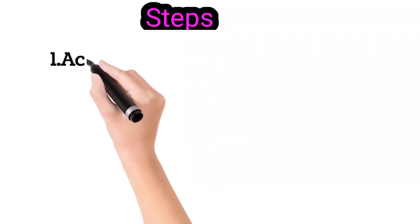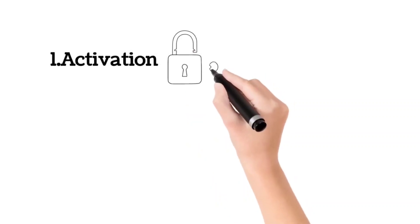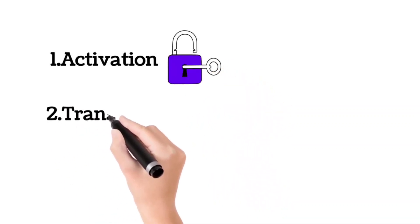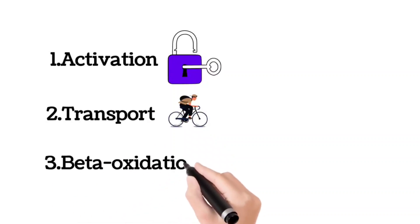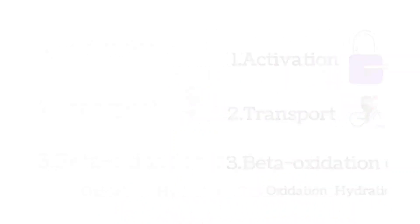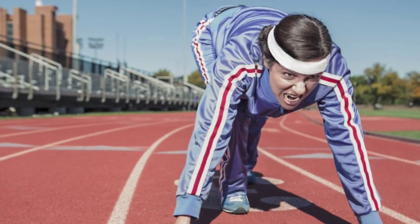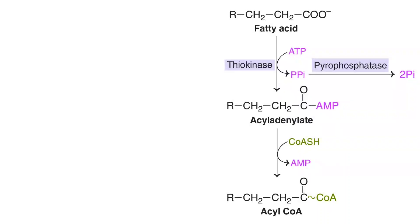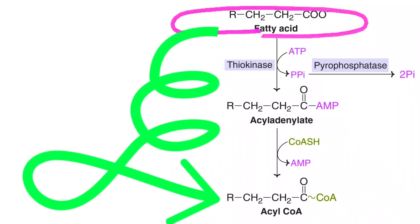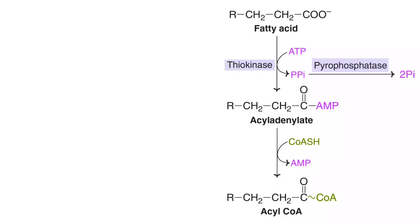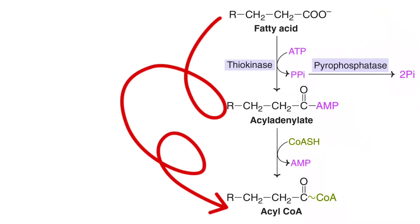Beta oxidation of fatty acids involves the following steps: activation of fatty acids, transport of activated fatty acid into mitochondria, and the beta oxidation cycle, which involves oxidation, hydration, oxidation, and thiolysis. For activation, beta oxidation requires the active form of the fatty acid. These inactive fatty acids are converted into active fatty acids by attaching a molecule of CoA — Coenzyme A — converting the fatty acid into the corresponding fatty acyl-CoA.